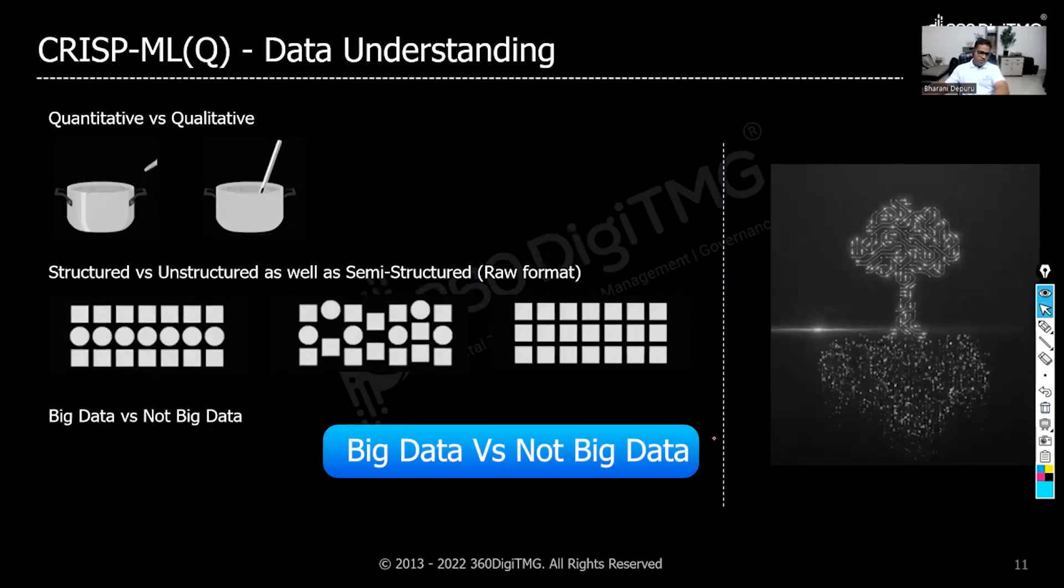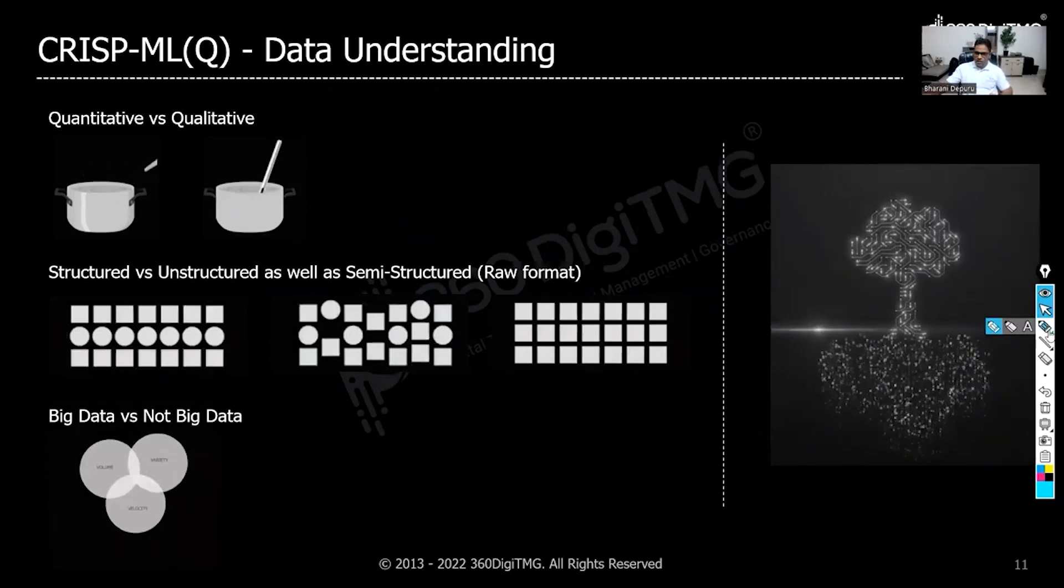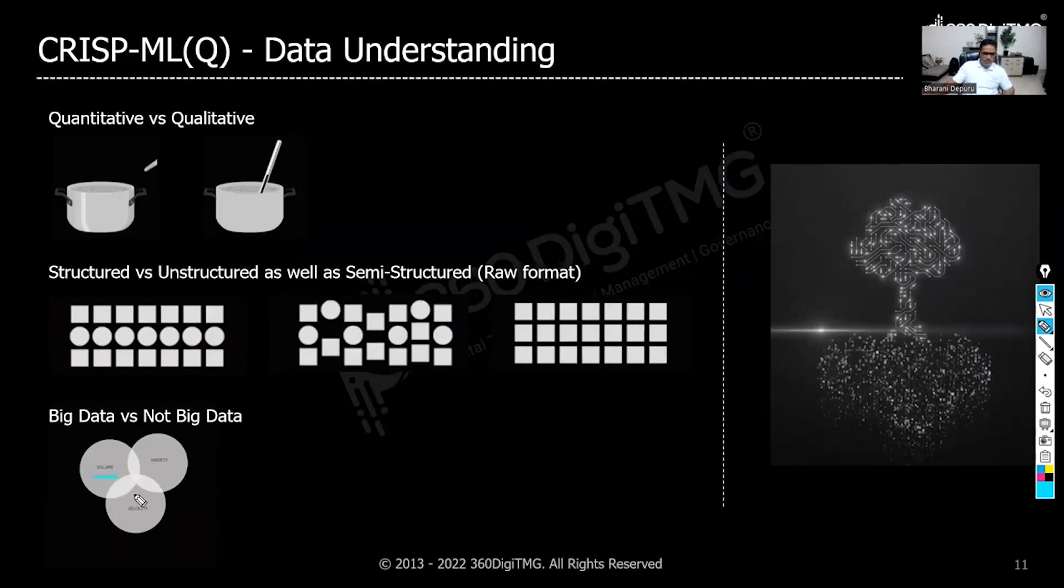Now we have big data versus non-big data. If you have huge volume of data which is getting recorded at a rapid speed, and if you have variety of data being captured, that data would be called as big data.